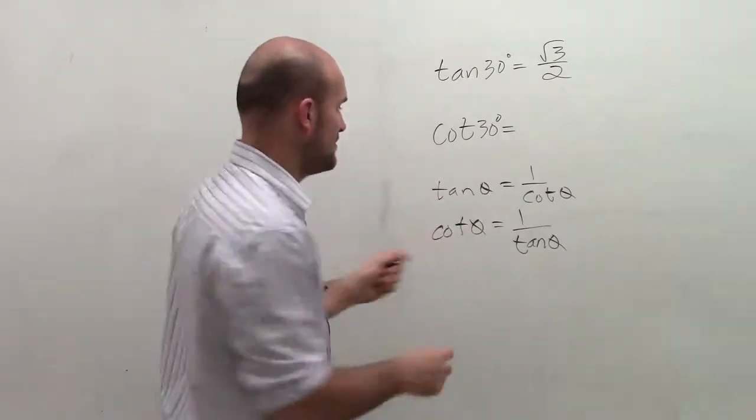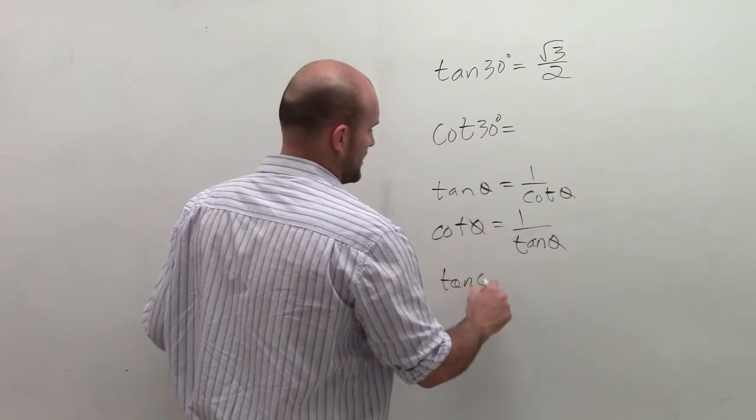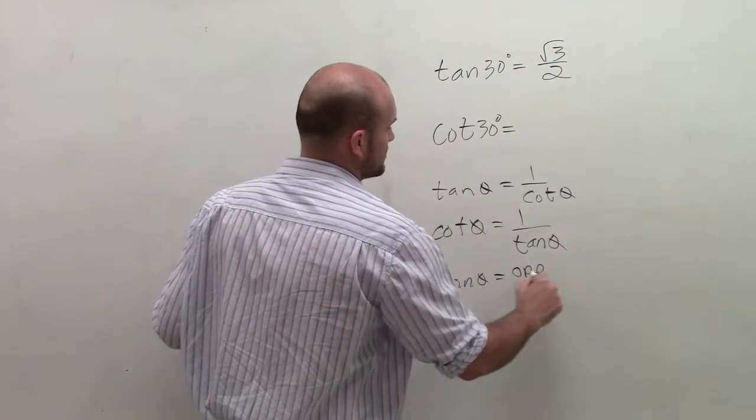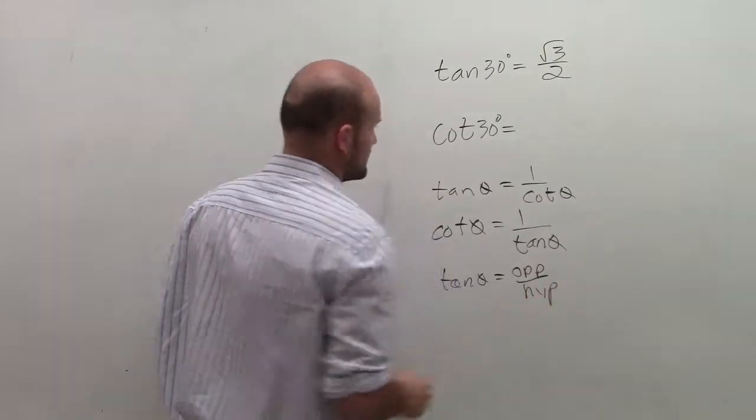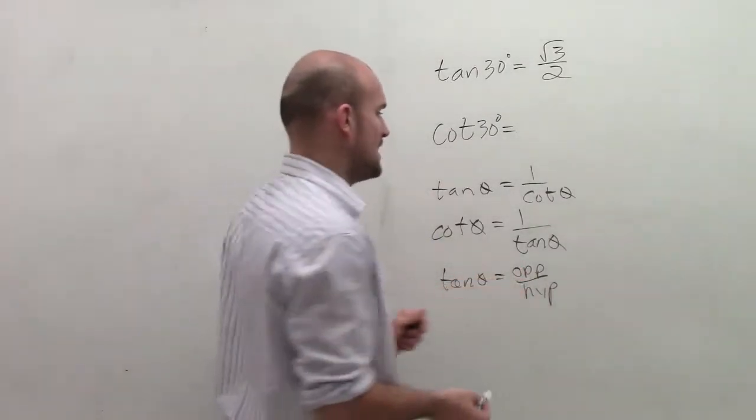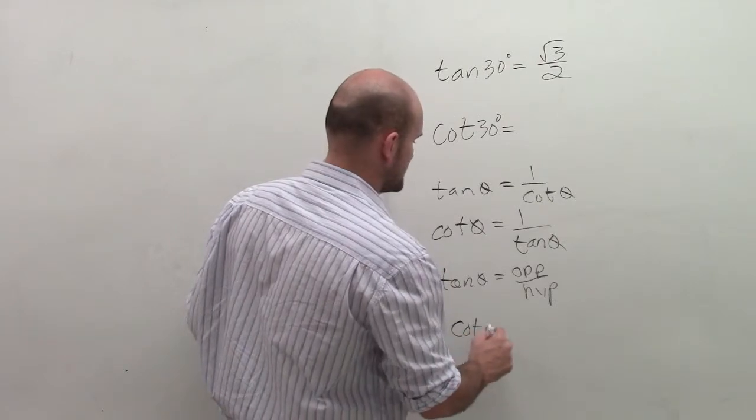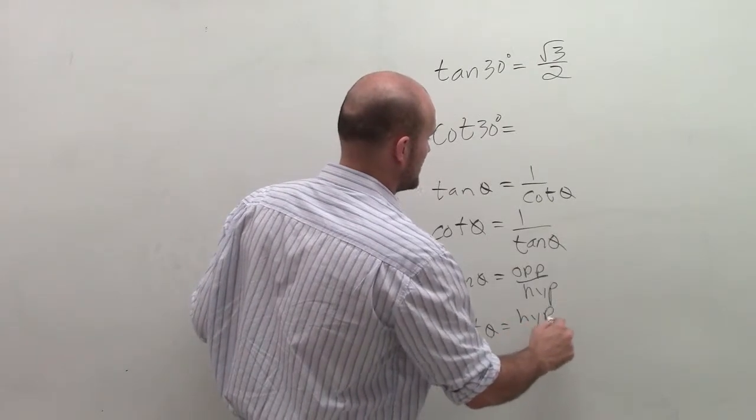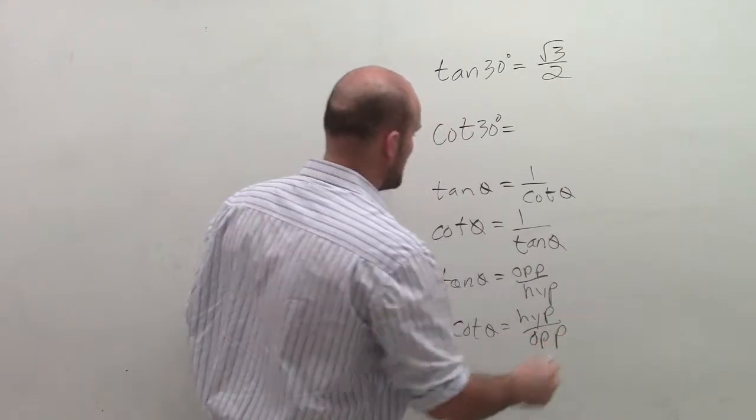And if we can remember, the tangent of an angle theta represents the opposite over the hypotenuse. So when I talk about the reciprocals, the reciprocal of opposite over hypotenuse for cotangent is just going to be hypotenuse over opposite.